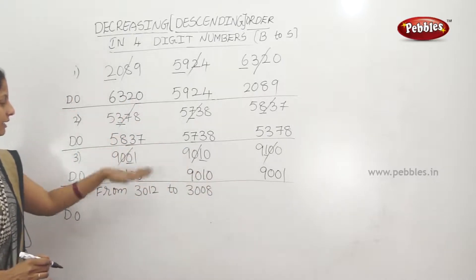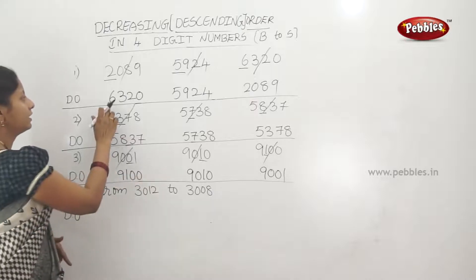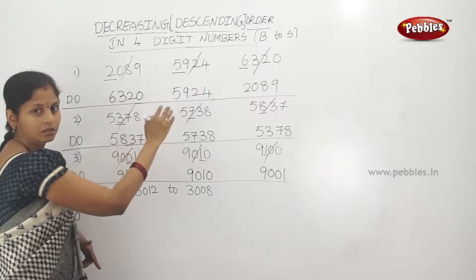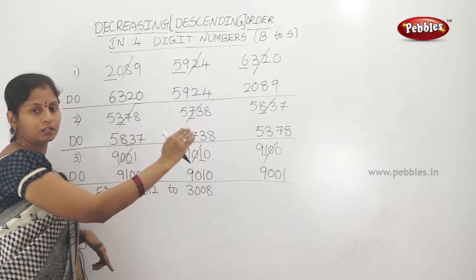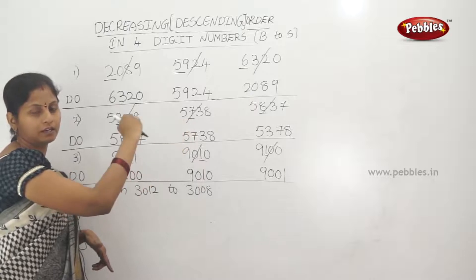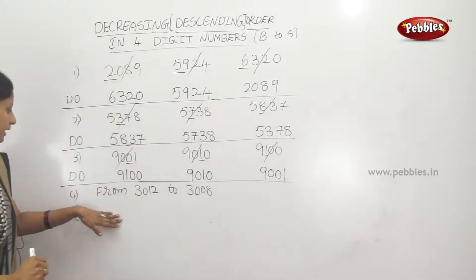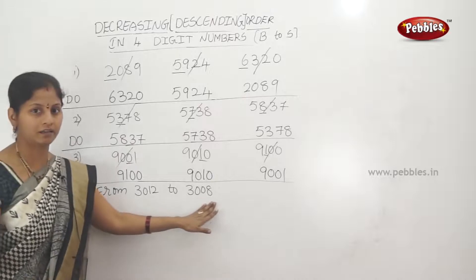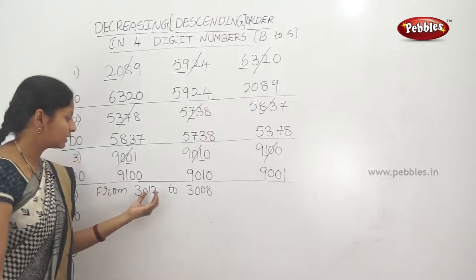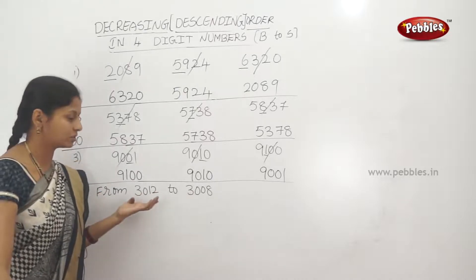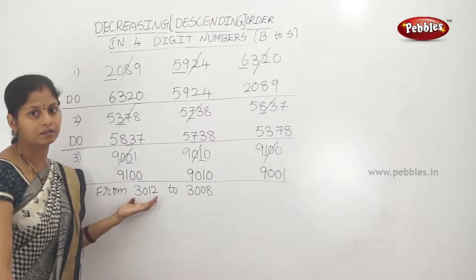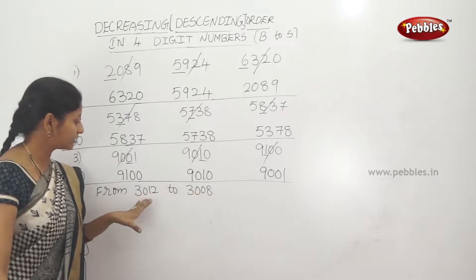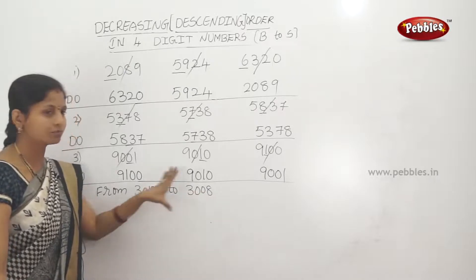Three examples have been examined. For descending order, we always write the bigger number first. For example, from 3,012 going down to 3,008 — this is descending order, arranging from bigger to smaller, which is the big-to-small idea.